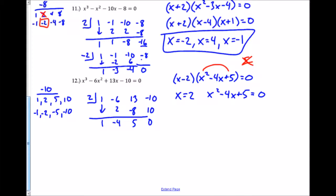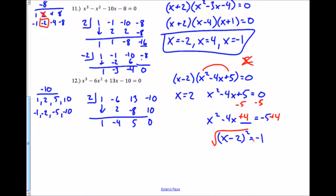I'll complete the square. I subtract 5 from each side — the a-value is 1 and b is even, so I do (b/2)² which gives me 4, adding it to both sides. I get (x minus 2)² equals negative 1. Taking the square root gives x minus 2 equals plus or minus i, so x equals 2 plus or minus i. My three total solutions are x=2 and x=2±i.